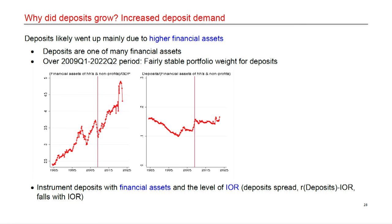Why did deposits go up? A key channel is that households had more financial assets to invest. Following household portfolio theory, if they had more money to invest they would put some in deposits, some in bonds, some in stocks — so more money leads to higher deposit demand. Household financial assets to GDP has been going up dramatically. The portfolio share for deposits is amazingly stable in the post-GFC period at around 16-17%. Household financial assets make a good instrument for deposits. The main strength comes from financial assets, and we also use the level of interest rates to do an over-identification test.